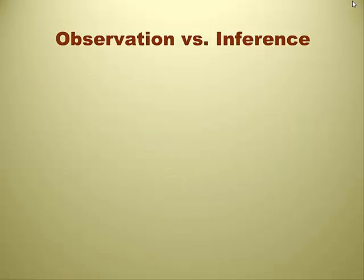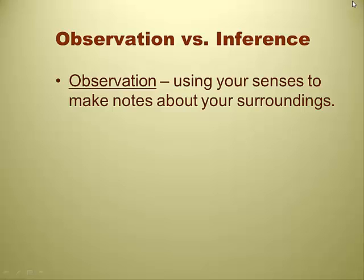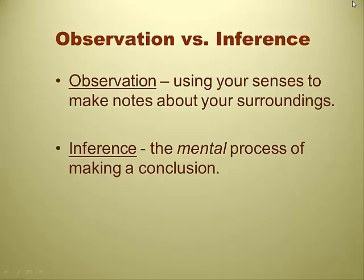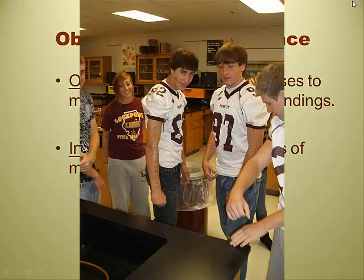Observation versus inferences — strictly by definition. An observation is using your senses to make notes about your surroundings. Senses meaning your eyes, nose, ears, etc. Inferences are the mental process of making a conclusion. Inferences are usually based on established prejudices. For example, just because a student walks in with a Lockport football jersey on does not necessarily mean he plays football. If I look at that kid and say 'a football player,' that's an inference — maybe he's just wearing the jersey.